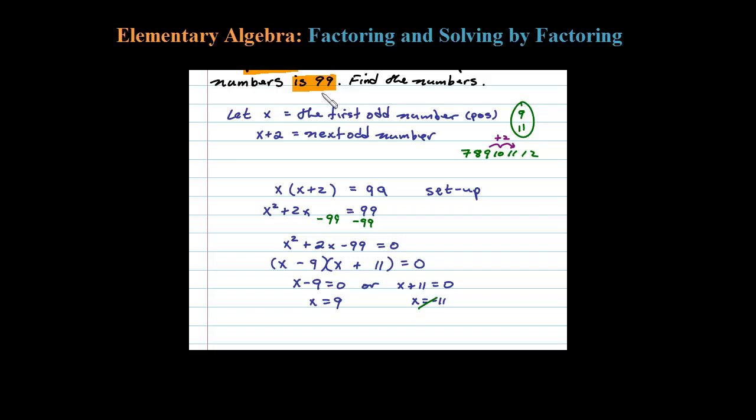So the two odd numbers whose product is 99, the two consecutive odd numbers whose product is 99, are 9 and 11. Certainly we could have guessed at that at the beginning like I did, but if the numbers are a little more difficult, a little bigger for example, certainly you want to solve this using algebra, not guess and check.